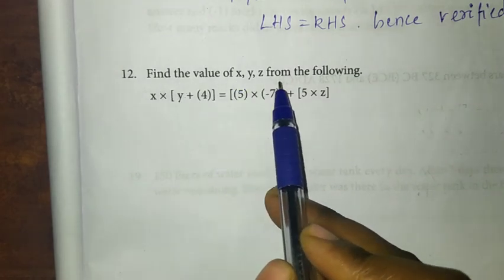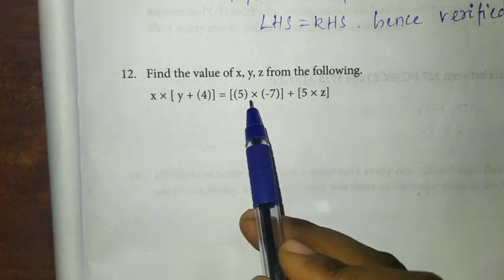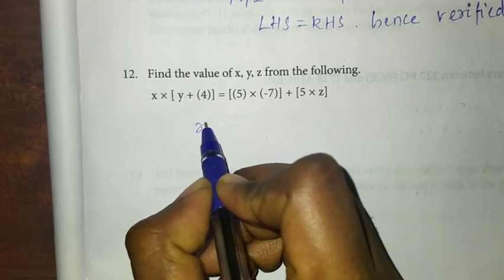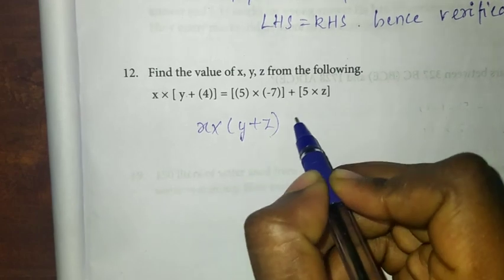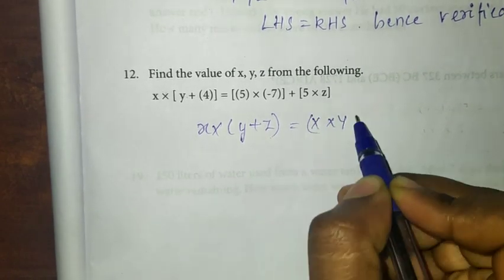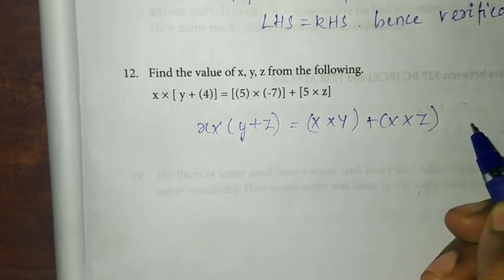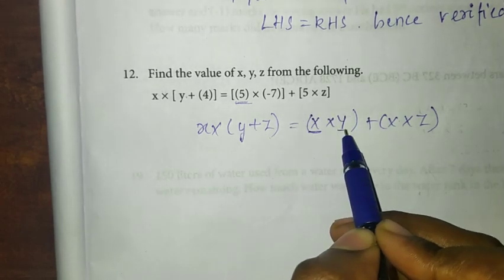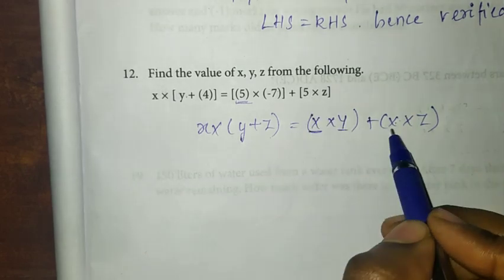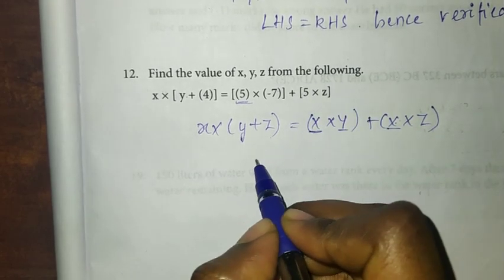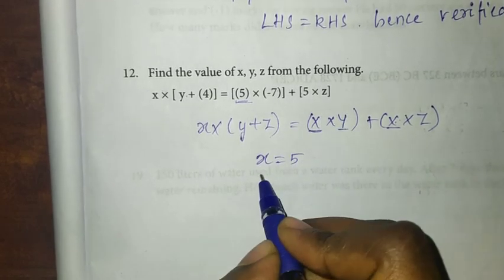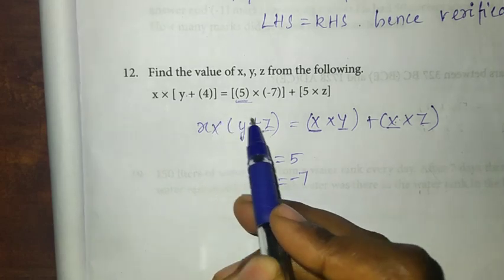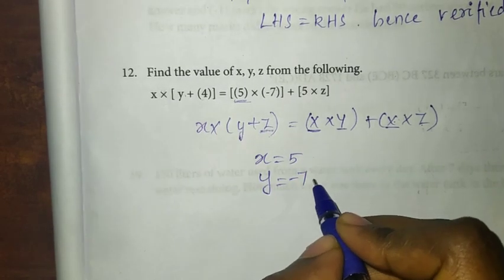Twelfth question: find the value of x, y, z from the following. The question is in the format of distributive property of multiplication over addition: x into y plus z equals x into y plus x into z. Identifying the values: x equals 5, y equals minus 7, and z equals 4.